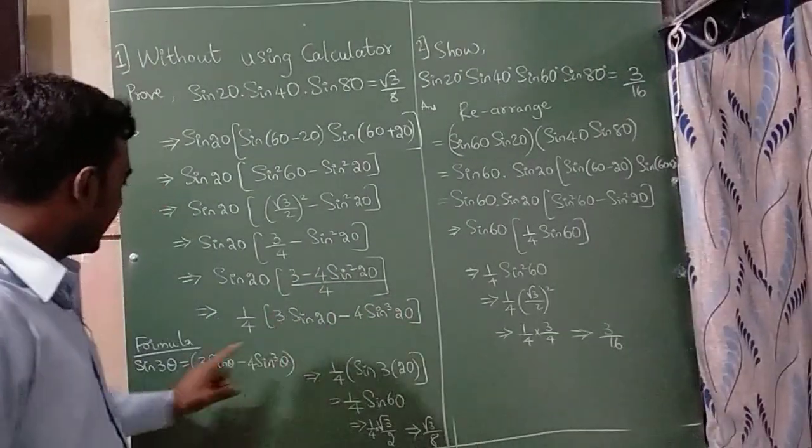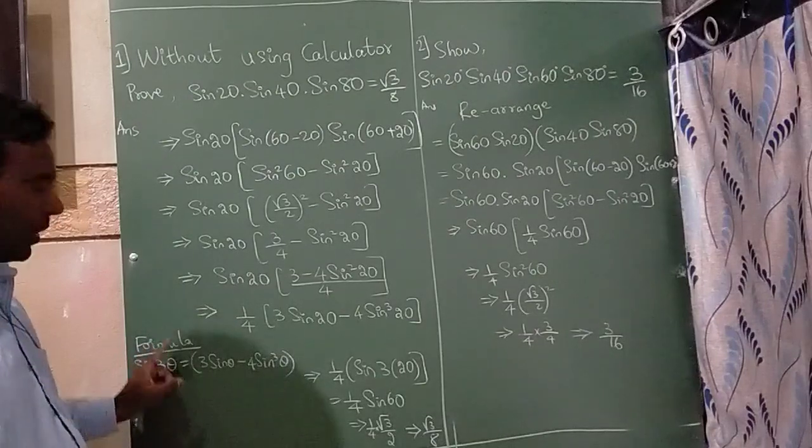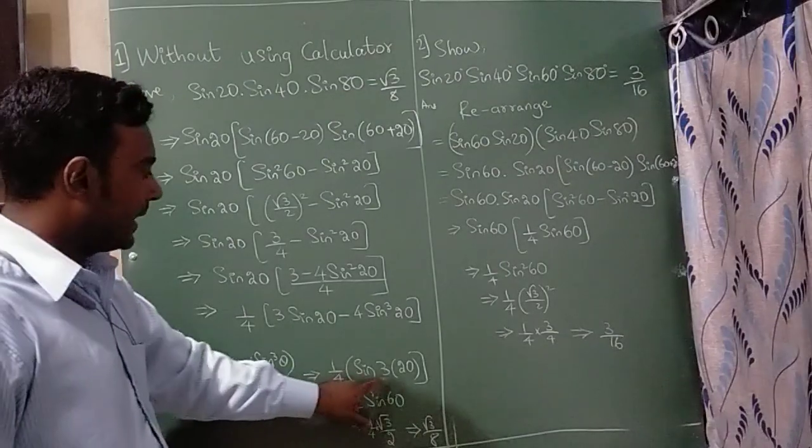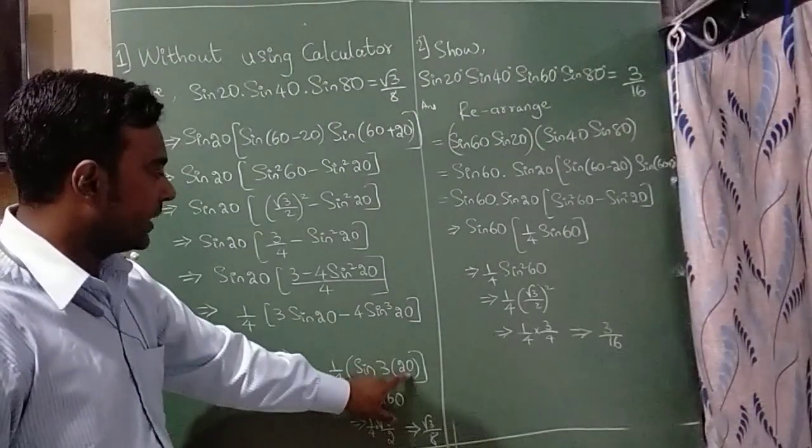This whole term is nothing but a sin 3 theta formula, 3 sin theta minus 4 sin cube theta. 1 by 4 sin 3 theta value is 20 degree here.